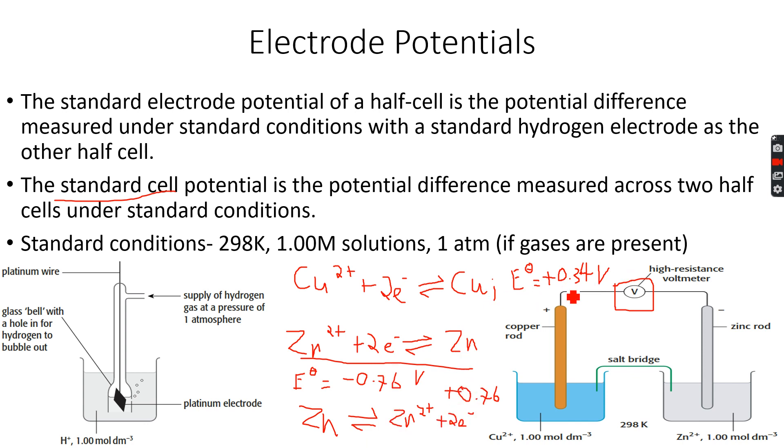We will add 0.76 plus 0.34, because both were positive after the reversal, and this gives us 1.10 volts. So what I will see on the voltmeter over here is the value of 1.10 volts.